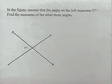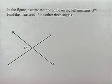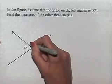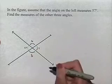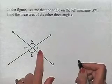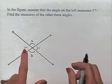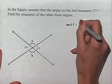Now let's look at the relationship between angles when we have intersecting lines. In the figure, assume that the angle on the left measures 57 degrees. Find the measures of the other three angles. We're going to begin by labeling: I'll call the angle to the right angle 1, the angle at the top angle 2, and the angle at the bottom angle 3. To find the measure of angle 1, we notice that it is a vertical angle with the given 57 degree angle, so the measure of angle 1 is also 57 degrees.